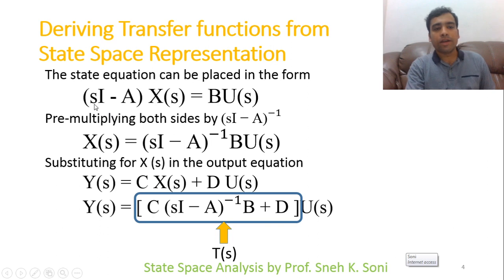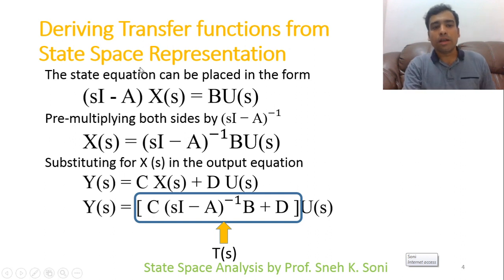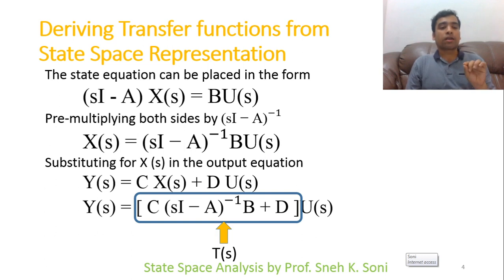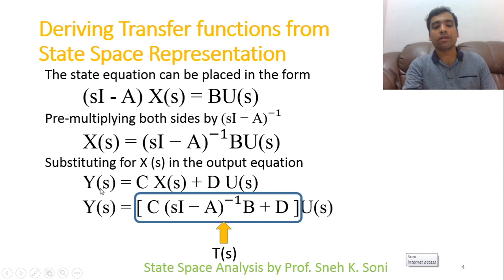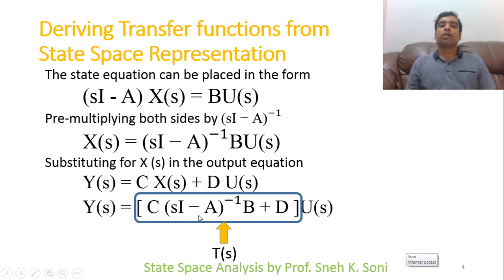When we simplify, it becomes (sI − A)X(s) = BU(s). Now, if I multiply both sides by (sI − A)⁻¹, then X(s) = (sI − A)⁻¹ BU(s). I now have a value for X(s) which I can place into the output equation Y(s) = CX(s) + DU(s). Substituting and taking U(s) common, the final expression becomes Y(s) = [C(sI − A)⁻¹B + D] U(s).